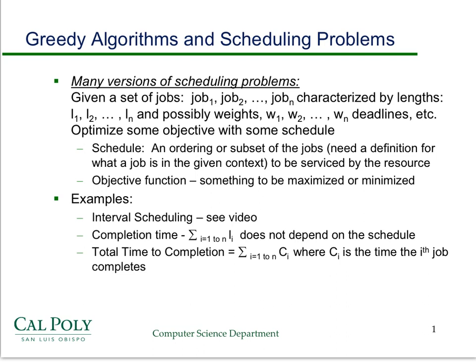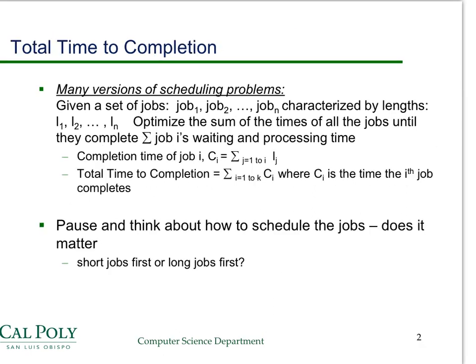We want to minimize the total time to completion. The completion time of a job is the sum of the lengths of all jobs that come before it, including that job itself. What we want to minimize is the total time to completion, where C_i represents the time the i-th job spends in the system including wait time and processing time. Pause and think: does the ordering matter, and if so, should you do short jobs first or long jobs first?